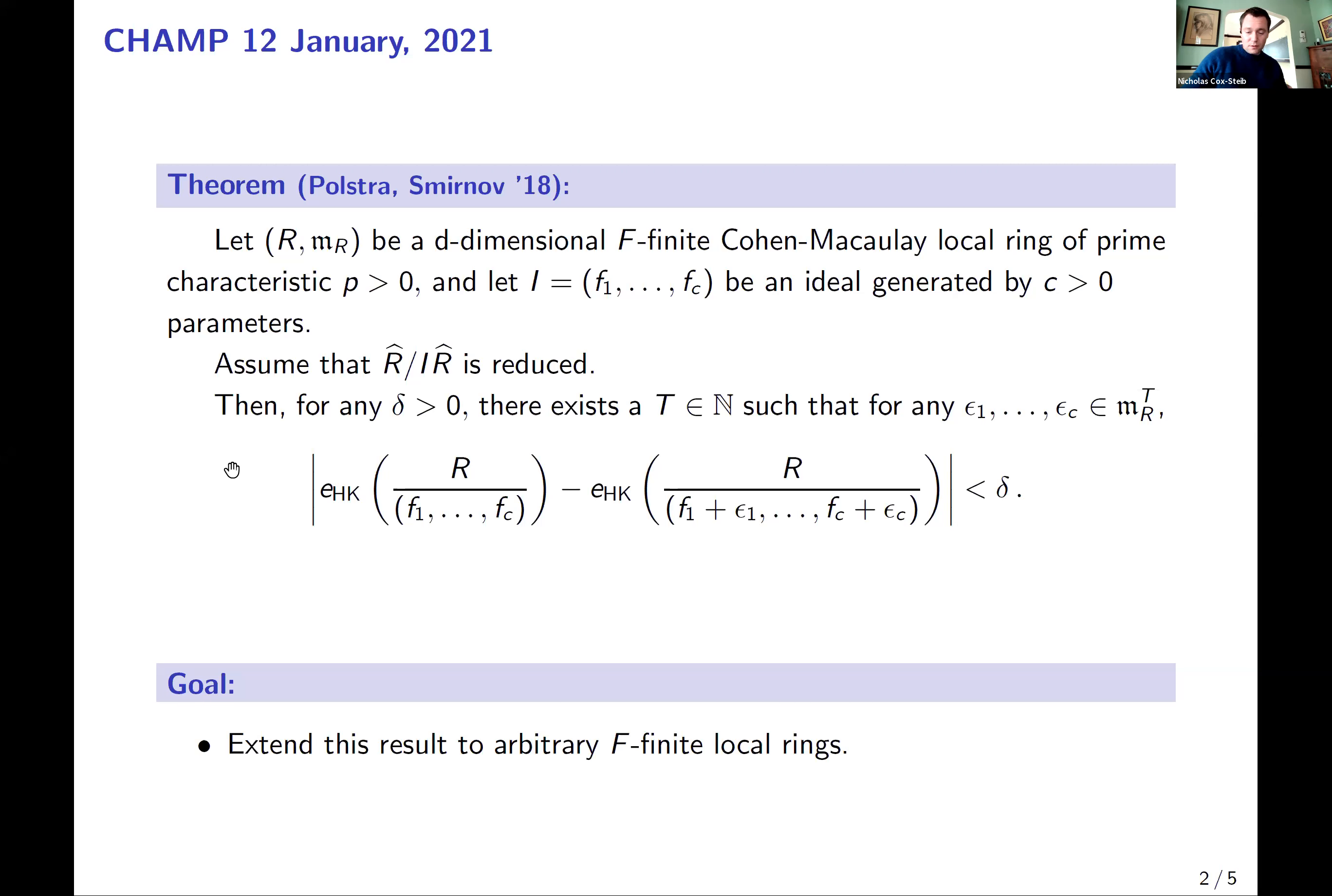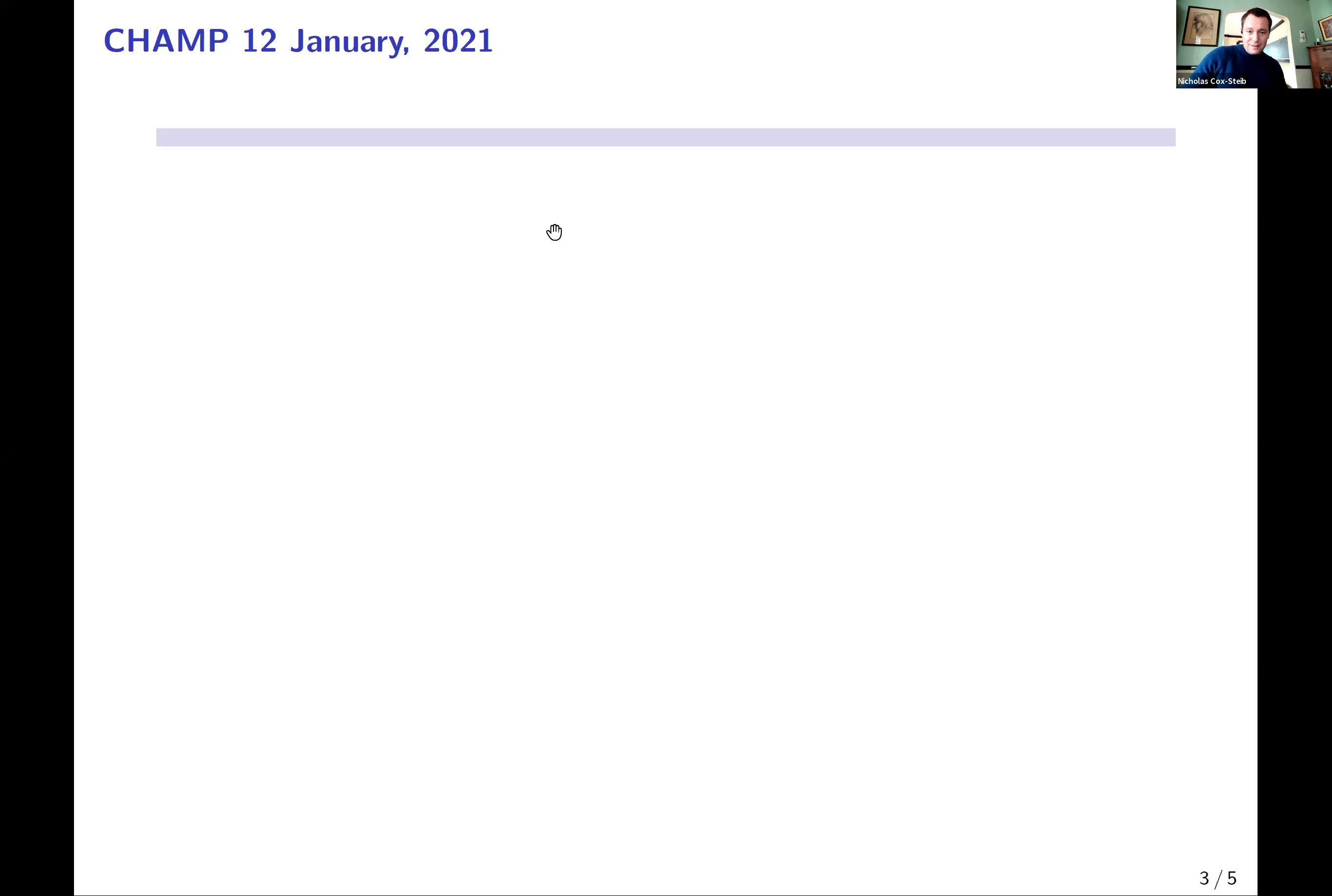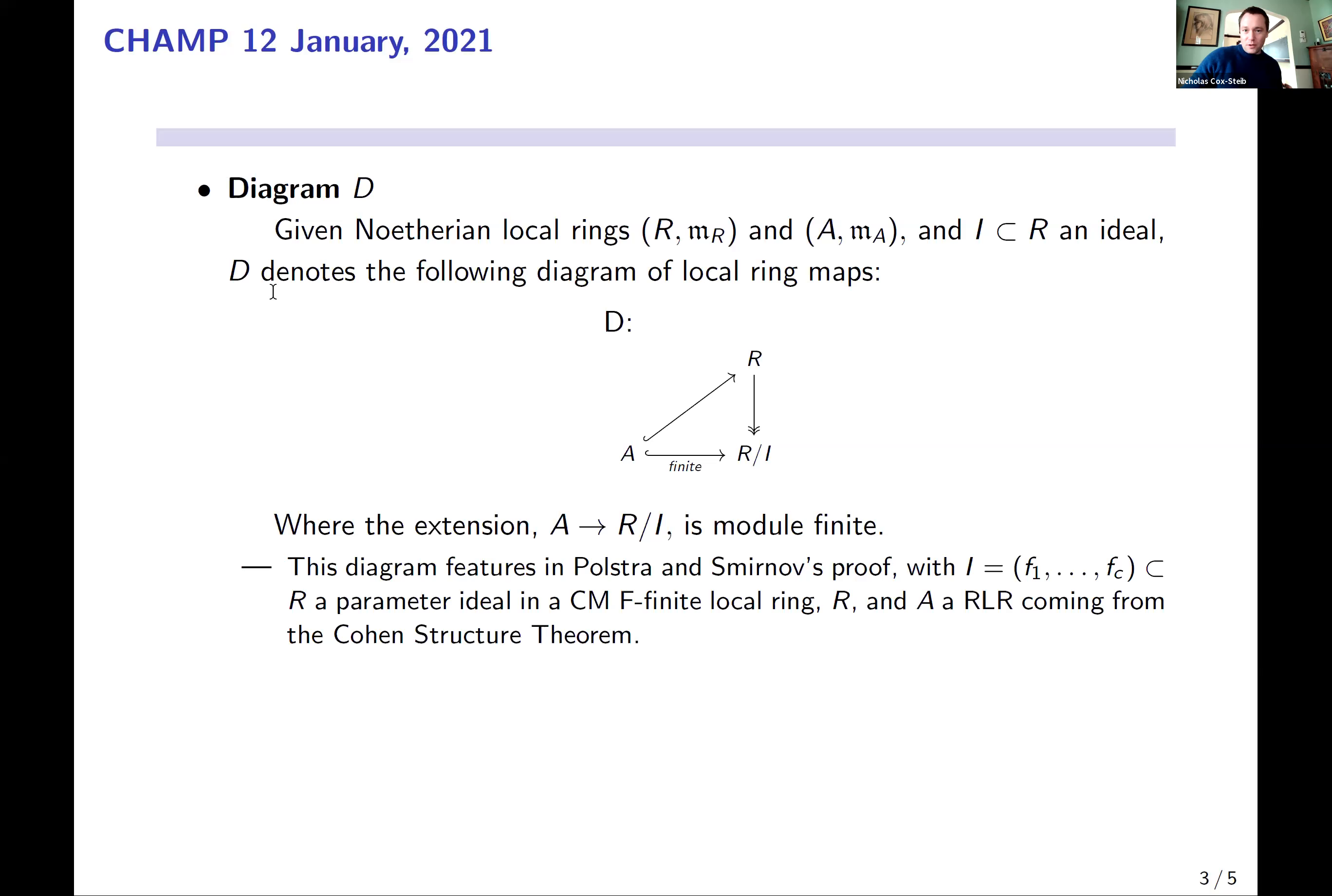So my goal, or the goal of this project, was to basically drop this Cohen-Macaulay assumption. So I want to extend it somehow to arbitrary F-finite local rings. To do that, I need to take sort of the pieces of the argument that are necessary to make it work and extend them. That's the idea, at least.